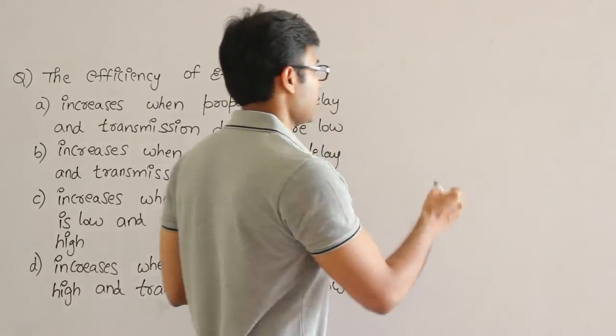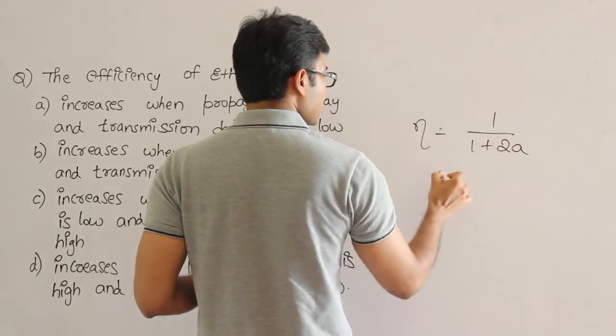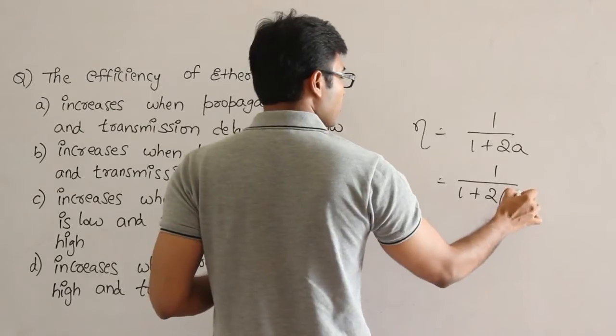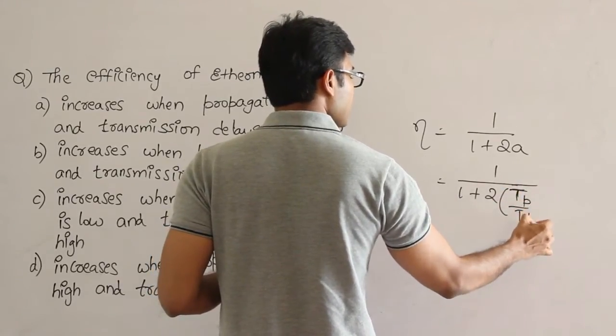So Ethernet efficiency is 1 upon 1 plus 2A, where A is Tp by Tt. Isn't it? So look at the efficiency.